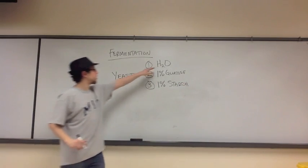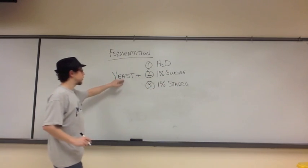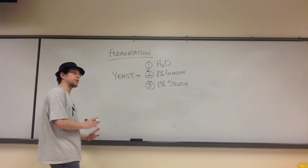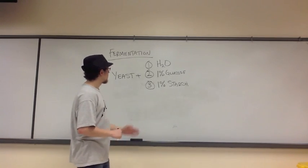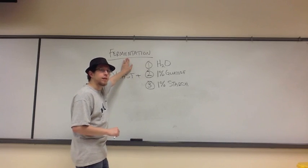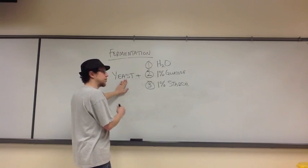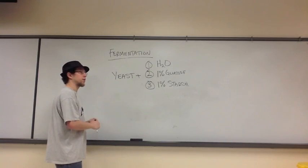You took 40 milliliters of each of these and added them to 0.5 grams of yeast. You mixed it and allowed it to sit at room temperature for five minutes. But in order for us to perform fermentation, or to force the yeast to perform fermentation, we need to put the yeast in an environment where there's no oxygen.